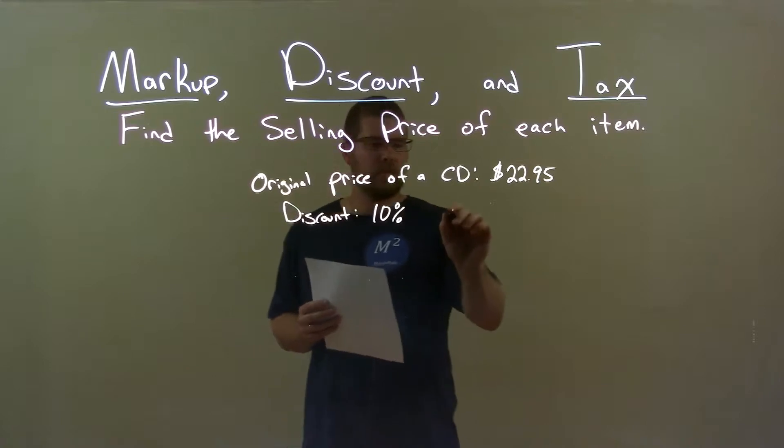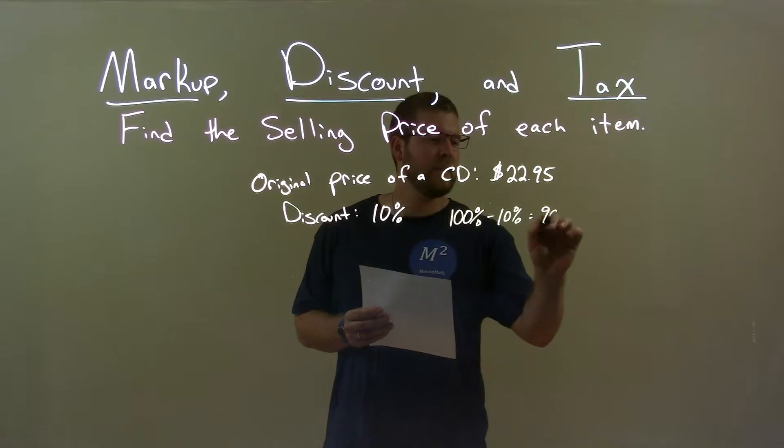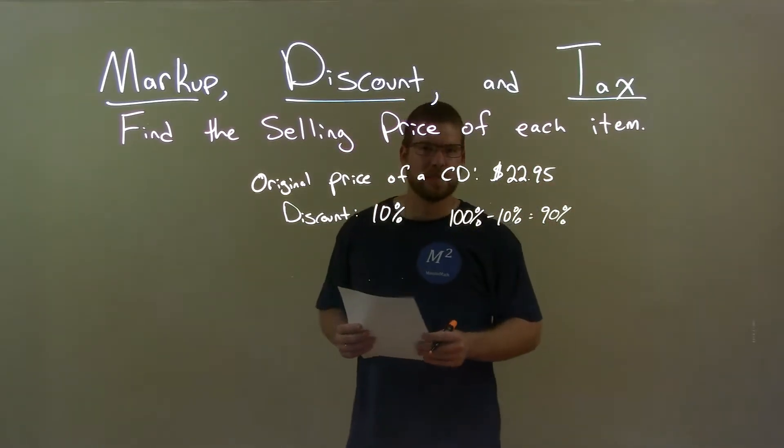We take 100% and subtract our discount, which is 10%, and that gives us 90%. That means we're going to pay 90% of the original purchase price.